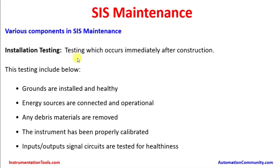We will now go over the critical items important for SIS maintenance. The first is installation testing — testing which occurs immediately after construction. This includes ensuring grounds are installed and healthy. All instruments installed, whether at the plant site or in the control room enclosure, must be properly grounded so that any fault on the instrument or prior line can be grounded and accidents due to wrong grounding can be avoided.